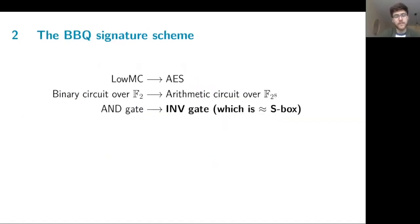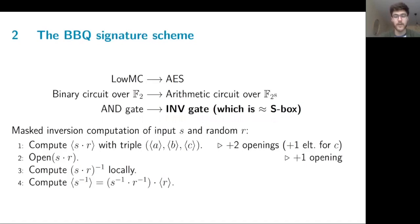When we first thought to do the barbecue signature scheme, the idea was to move away from LowMC and use AES instead. Now because AES is 11 times bigger as a binary circuit, we had to change the framework, and we decided to use arithmetic circuit over F2^8 instead. This meant that instead of using AND gates, we used inversion gates, which are pretty much equivalent to the S-box operation in AES. To do these inversion operations, we used a masked inversion technique, where the input S is first masked with a random R, which costs one of these pre-processed triples. This masking is opened, inverted, and the R inverse is then removed locally by the parties, and this produces the inverse of S.